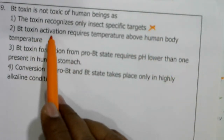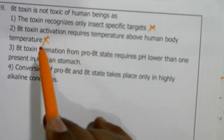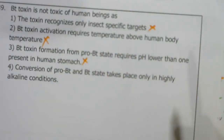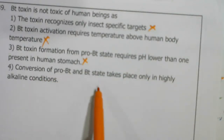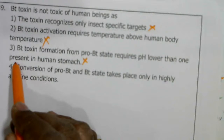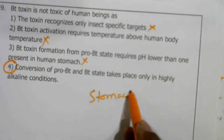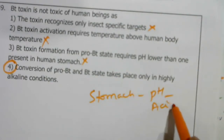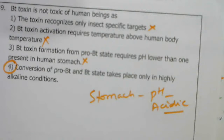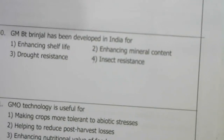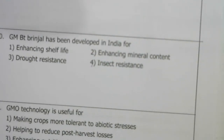Bt toxin is not toxic to human beings because conversion of pro-Bt to active Bt toxin takes place only under highly alkaline conditions (pH 12–14). The stomach of human beings has an acidic pH of 1 to 3. So we go with the fourth option.